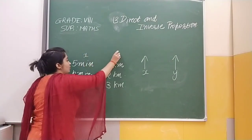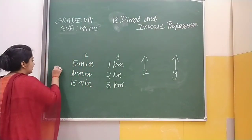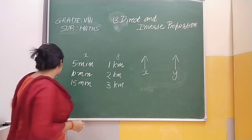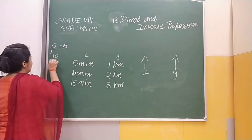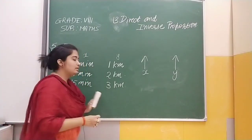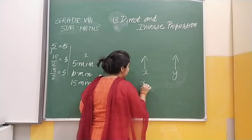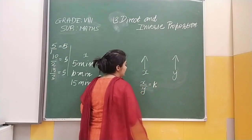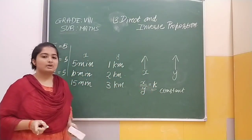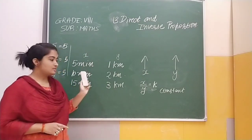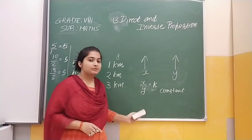Our time is x and our distance is y. The proportion is x upon y. So, 5 upon 1 gives 5. 10 upon 2 also gives 5. 15 upon 3 also gives 5. So when we compute the ratio, we will have a constant. If we have 5 upon 1, 10 upon 2, or 15 upon 3, the answer is always the same — that is 5.